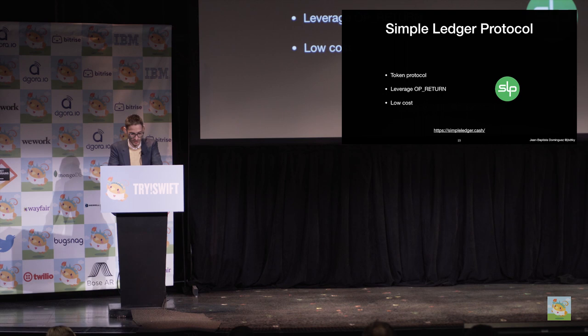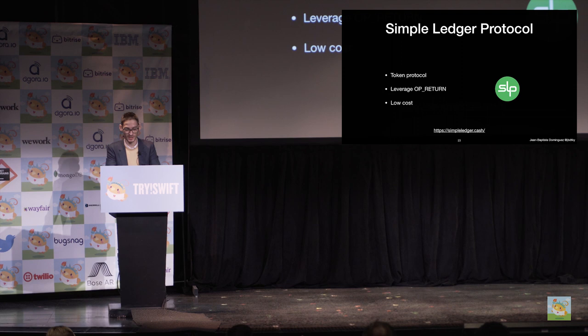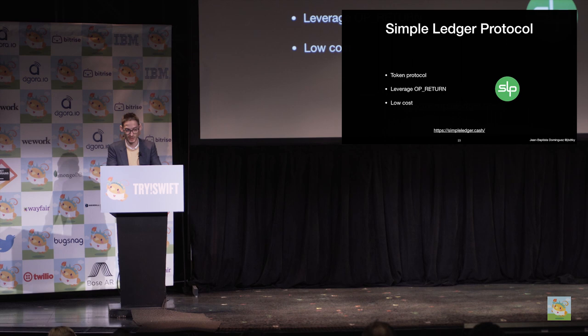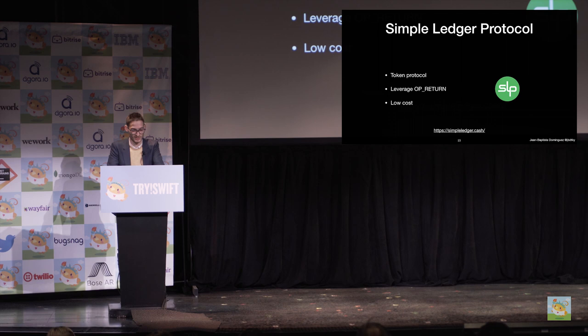Here is an example of a protocol leveraging OP_RETURN data. The Simple Ledger Protocol, or SLP, allows you to tokenize virtual gaming assets, licenses, digital media rights, gift cards, company stock shares, and anything you could imagine. Furthermore, you inherit Bitcoin Cash advantages: scalability, cheap transactions, zero-conf. I've already met companies trying to move away from ERC-20, and today SLP is the way to go. SLP tokens are already shown in exchanges where you can trade them. I really encourage you to check out the specification. In addition to BitcoinKit, I'm currently working on an iOS SDK for easily integrating SLP tokens in your app, and hopefully it will be released soon.